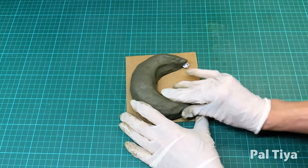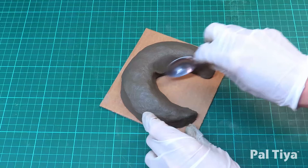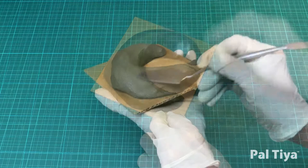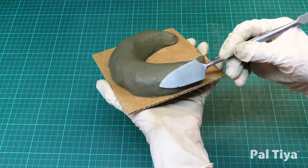Now using the back of an old spoon, start to smooth out the surface. You can use a rubber kidney, a tool or a spoon for this.